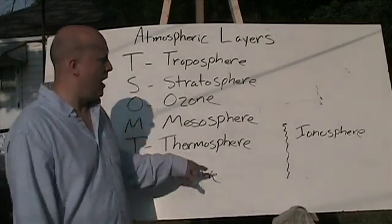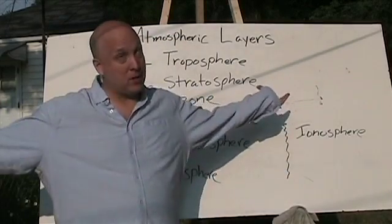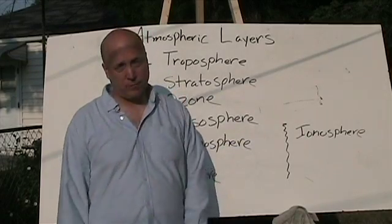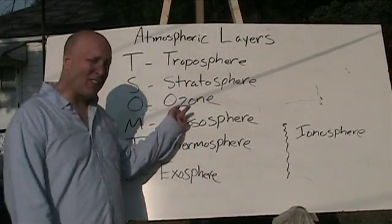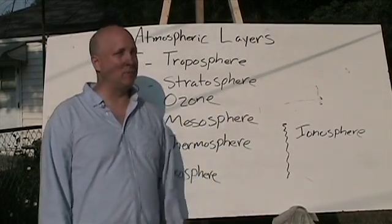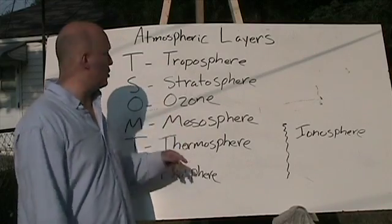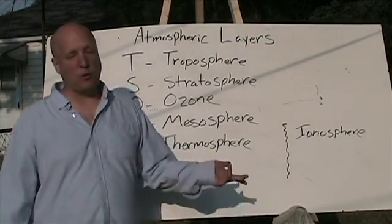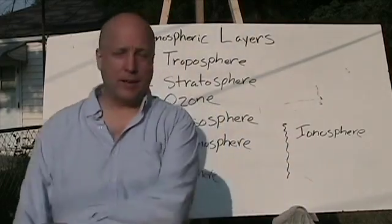This covers the layers of the atmosphere. I don't have a mnemonic for the Ionosphere — it spans the Mesosphere, Thermosphere, and Exosphere. It could also be argued that Ozone isn't really a distinct layer, just a component. Troposphere is closest to Earth, and Exosphere is farthest — you're exiting out of our sphere, like an exit door.